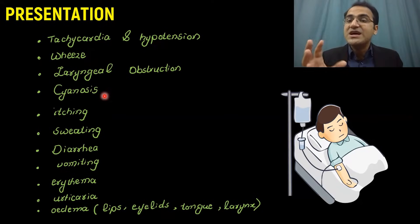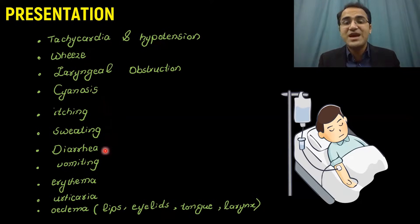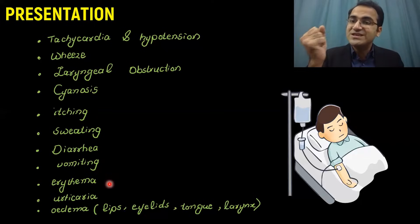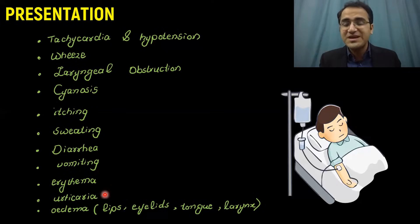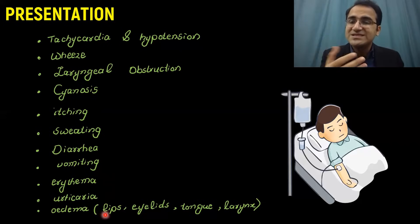Histamine release causes itching and widespread urticaria. The patient would be sweating and may have diarrhea or vomiting. Due to vasodilation, there will be dilation of vessels resulting in erythema of the body, urticaria, and edema of the lips, eyelids, tongue, and larynx.